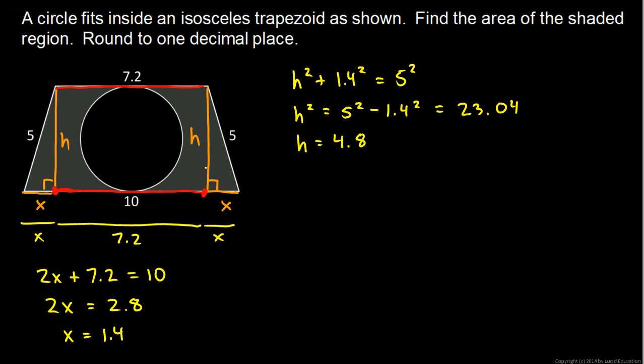That's the area of the trapezoid. And that will be the average of the bases. So that's 7.2 plus 10 divided by 2 times the height. And the height is 4.8.